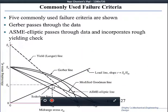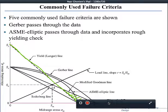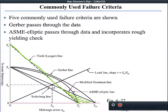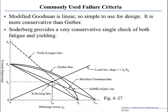The next line we've discussed before is the Langer line, and the Langer line is a protection against yield. We want to make sure we don't go into the dangerous region where we can have yield on the first cycle. We can use either one of these lines for design purposes, as we'll see in the examples.